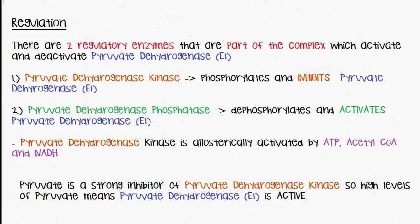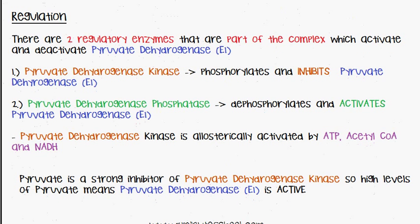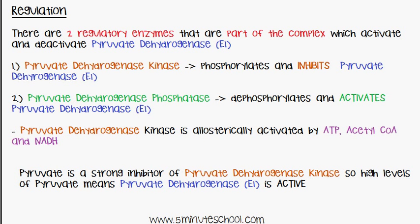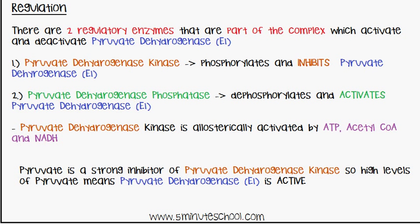Finally, regarding the regulation of the pyruvate dehydrogenase complex: there are two regulatory enzymes which are part of the complex itself and they activate or deactivate E1. The first is pyruvate dehydrogenase kinase, which phosphorylates and inhibits pyruvate dehydrogenase E1. The second is pyruvate dehydrogenase phosphatase, which dephosphorylates and activates E1. Pyruvate dehydrogenase kinase is allosterically activated by ATP, acetyl-CoA, and NADH.